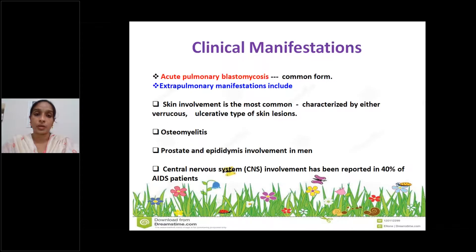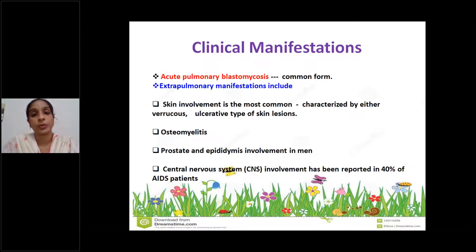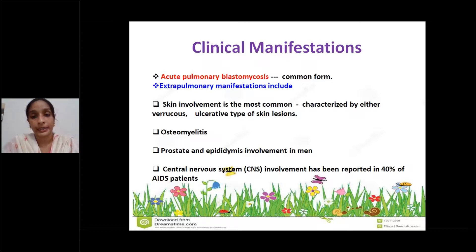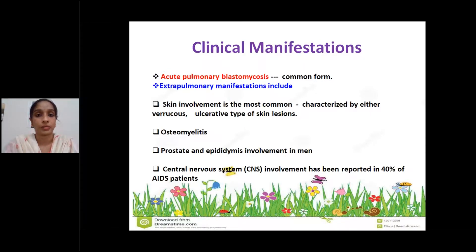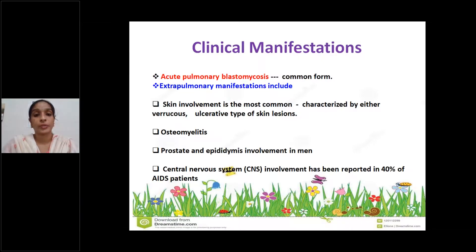Clinical manifestations of blastomycosis: acute pulmonary blastomycosis is the primary form, which can lead to extra-pulmonary manifestations. Skin involvement is the most common extra-pulmonary manifestation, characterized by either verrucous type or ulcerated type skin lesions. Osteomyelitis and prostate involvement are also present. HIV patients are more prone to CNS blastomycosis.